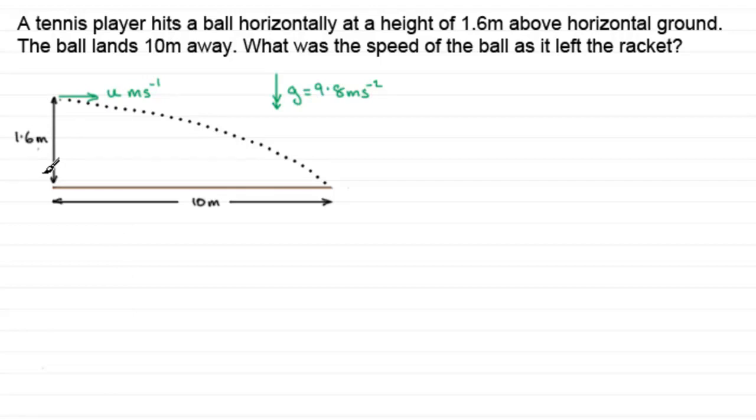To do this I've sketched this question up here. We've got a tennis player hits a ball horizontally at a height of 1.6 meters above horizontal ground. The ball lands 10 meters away, and we've got to find the speed that the ball left the racket.